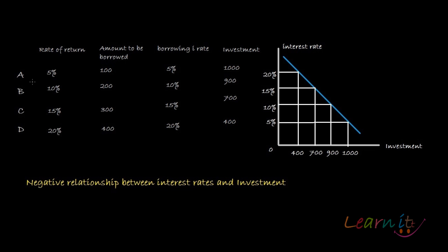The idea for this recording is to tell you about the negative relationship between interest rates and investments. Suppose there are four projects A, B, C, and D. The rate of return on A is 5%, on B is 10%, on C is 15%, and on D is 20%.